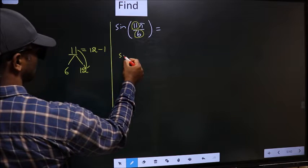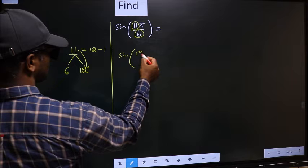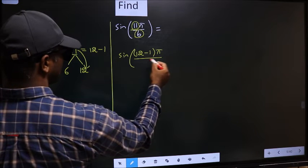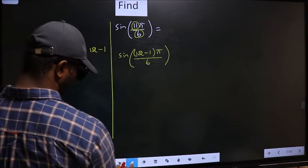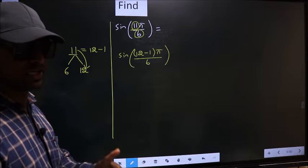So this will change to sine, in place of 11. Now you should write 12 minus 1, π by 6. This is your step 1.